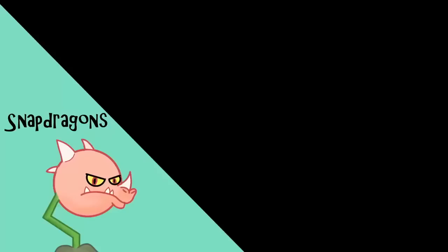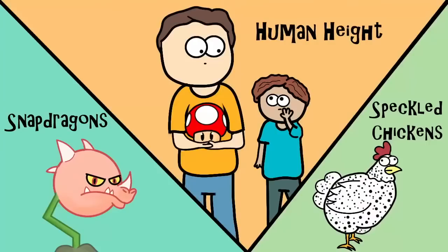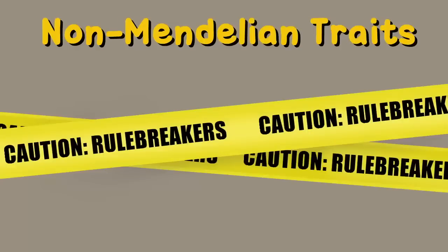What do snapdragons, human height, and speckled chickens have in common? Well, they are easily identified as non-Mendelian traits. By non-Mendelian, we mean that, genetically, they are rule breakers.